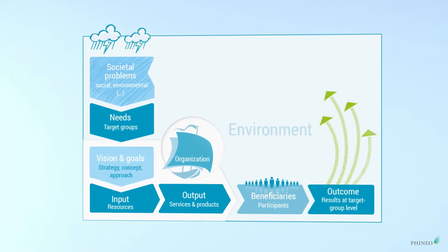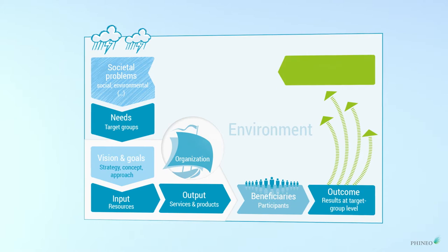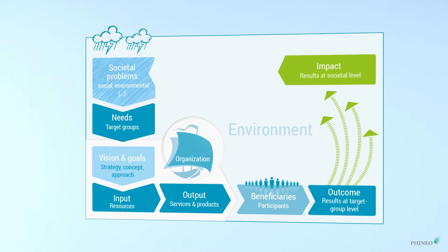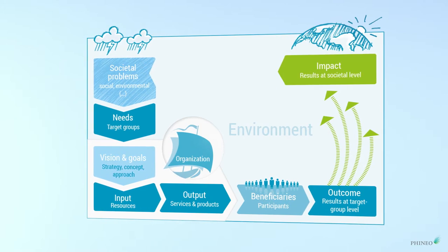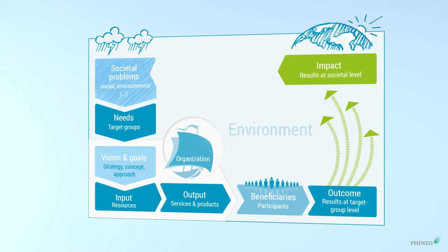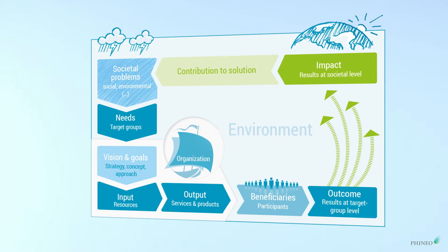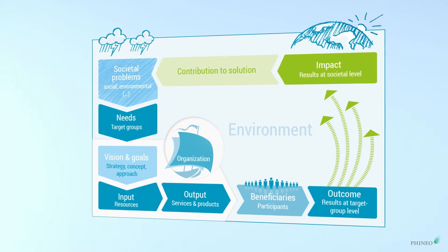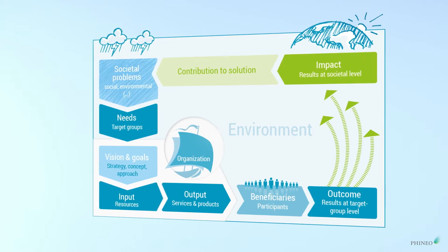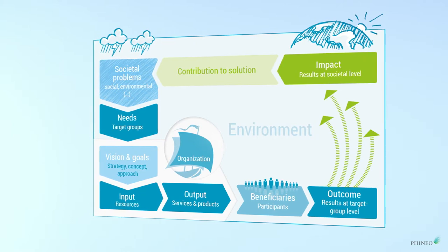In the next step, these outcomes can contribute to changes at a societal level, and this is impact. These changes give rise to new needs and objectives, so the impact cycle begins again. This is why planning and adjusting are part of an ongoing process in a project.